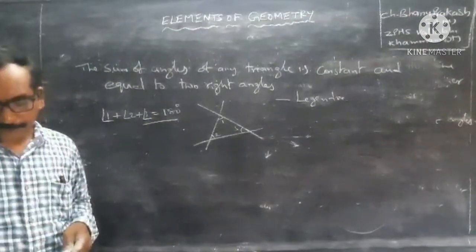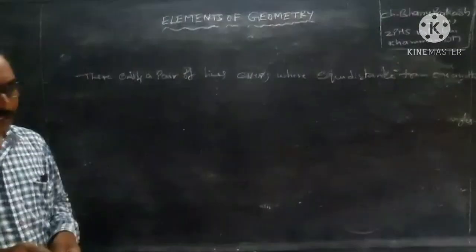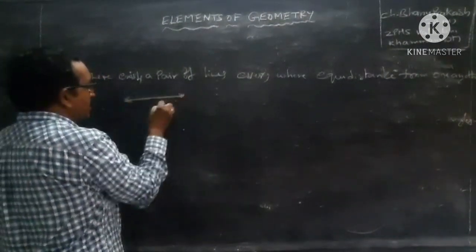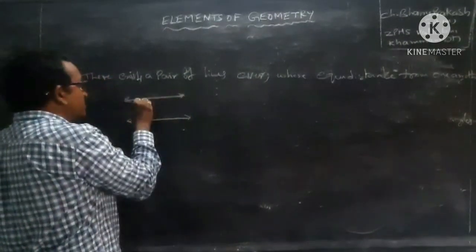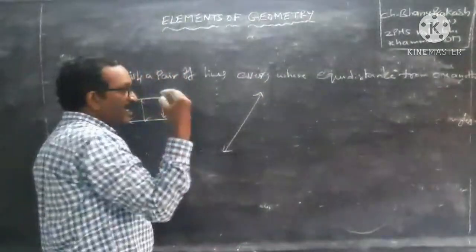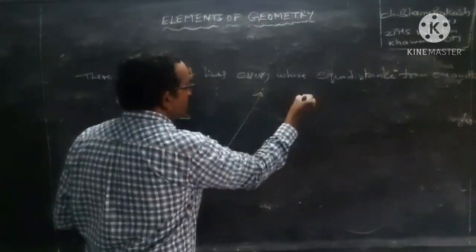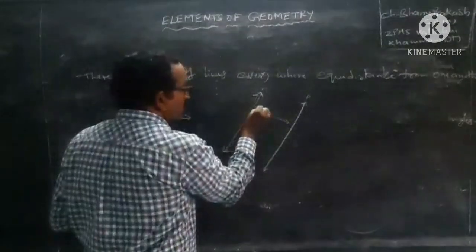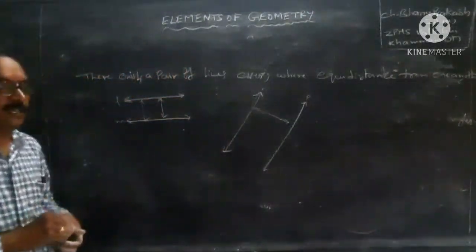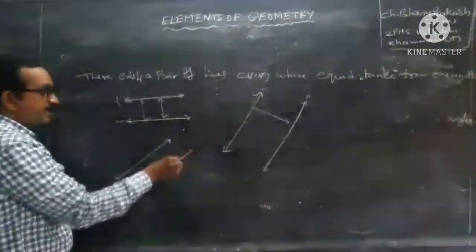Another postulate states: there exists a pair of lines everywhere equidistant from one another. That means if a line exists, another line also exists that is equal distance from it throughout.